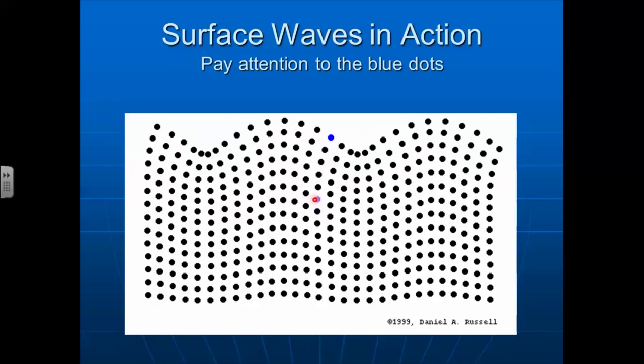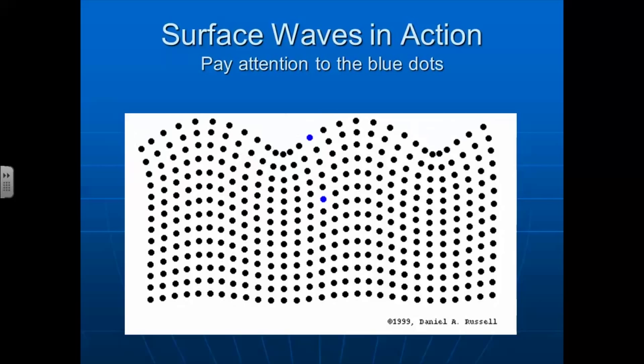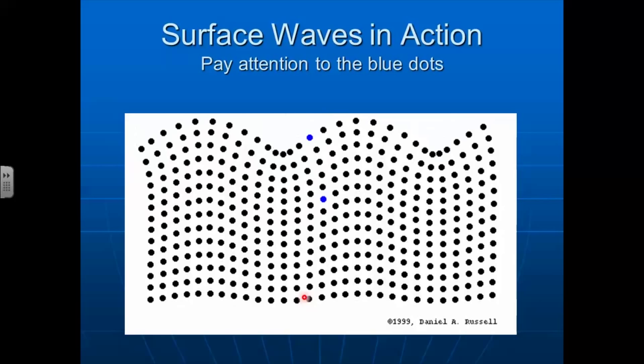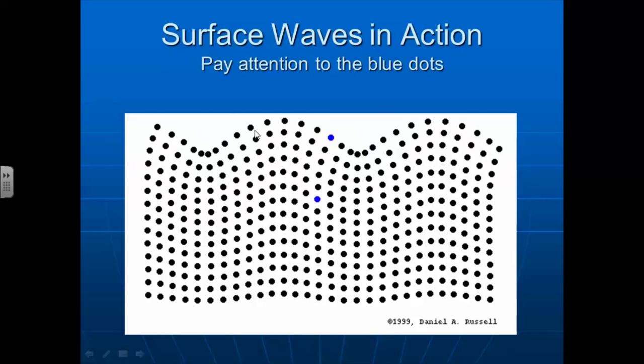So if you look at these two blue dots, one up at the top and one right here, you notice this dot is kind of going in circular elliptical paths, and the wave is moving forward. What's interesting about surface waves is they're not completely uniform. When you get down here at the bottom, you notice that it has really small motions. And up here at the very top, it has really big motions. This is how water waves work.